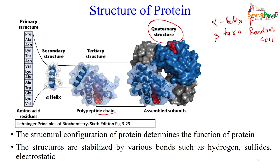We start with the linear chain (primary structure), then go to secondary structure, then tertiary, and finally quaternary structure. The function of a protein is totally dependent on its folded structure. If it is properly folded, protein functions properly; any disturbance in its folding leads to total loss of function.